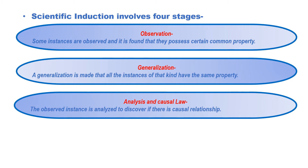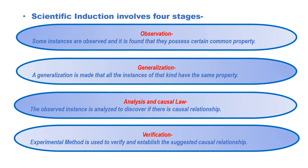If they have to verify that causal relationship — to test whether it is in reality true or not — they will perform an experiment. So the last stage is the verification stage, where the scientist performs an experiment to verify and establish the suggested causal relationship. After performing the experiment, they find that metal expands when heated, and thus heat is said to be the cause of expansion. The causal relationship is established.